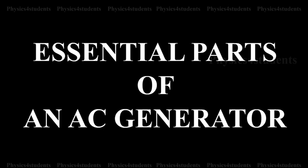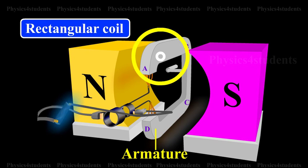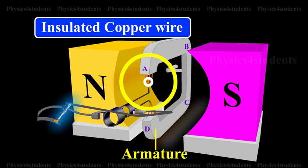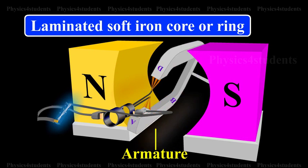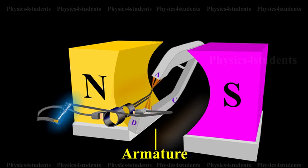Essential Parts of an AC Generator. Armature: Armature is a rectangular coil consisting of a large number of loops or turns of insulated copper wire wound over a laminated soft iron core or ring. The soft iron core not only increases the magnetic flux but also serves as a support for the coil.